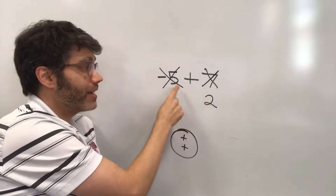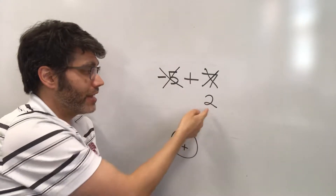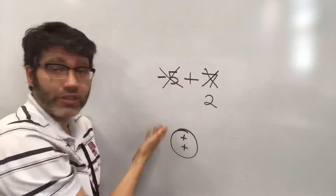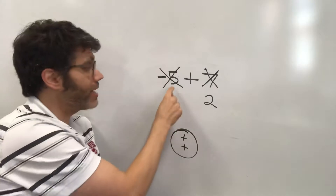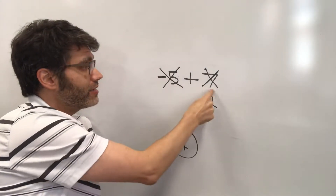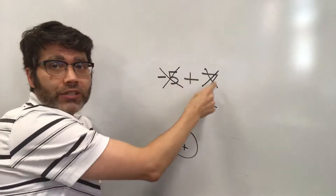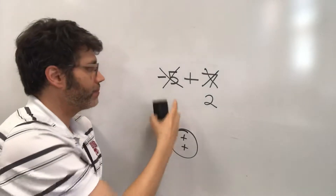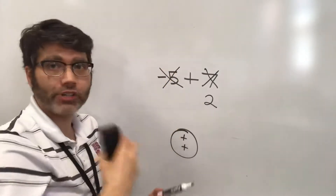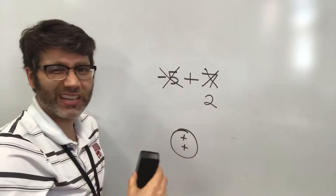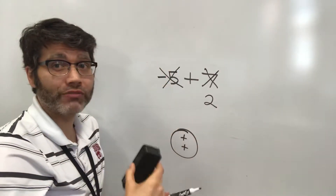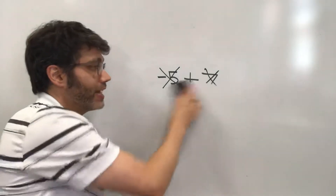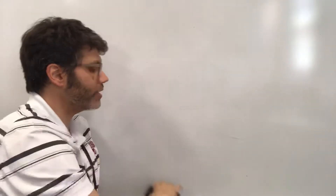That's another way to think about combining negatives and positives. Sometimes you'll end up with a positive, sometimes with a negative — it depends which number has a larger magnitude. If the negative number has a larger magnitude, a larger absolute value, then your overall answer is going to be negative.